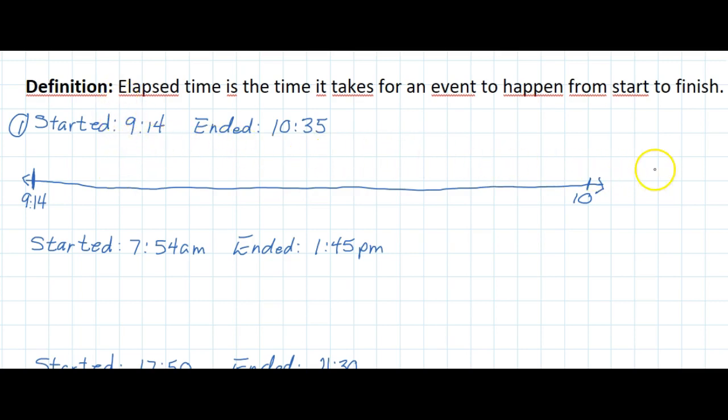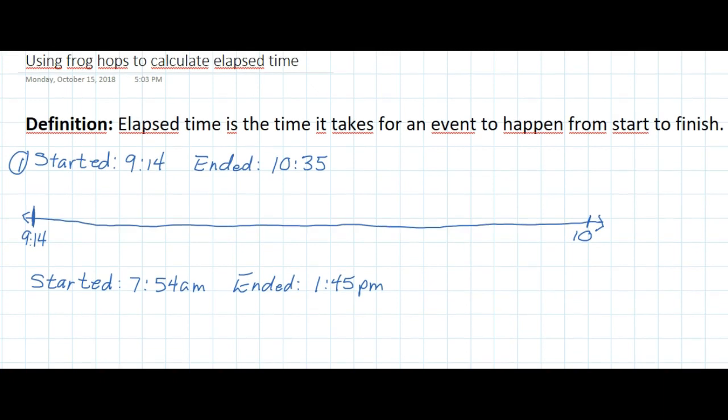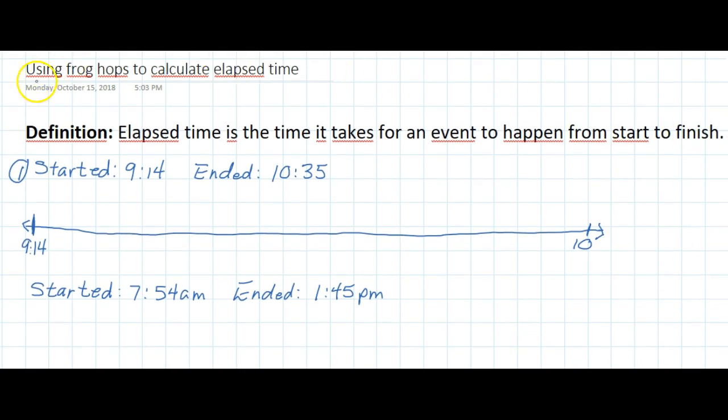All right, in this video we're going to talk about elapsed time, and specifically we're going to look at using frog hops to calculate the elapsed time. The definition for elapsed time that we're going to use here is that elapsed time is the time it takes for an event to happen from start to finish.